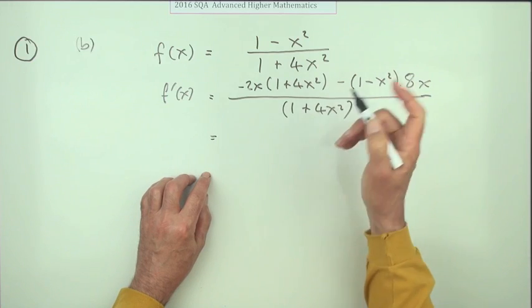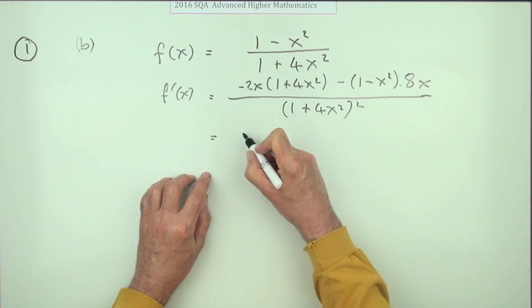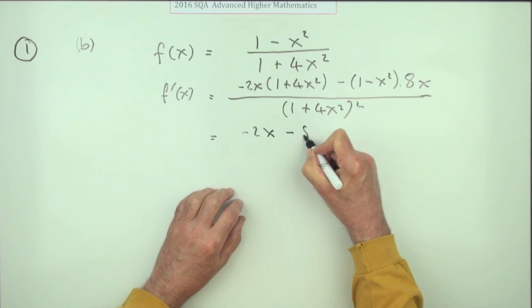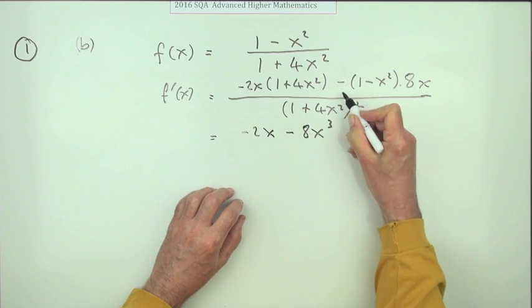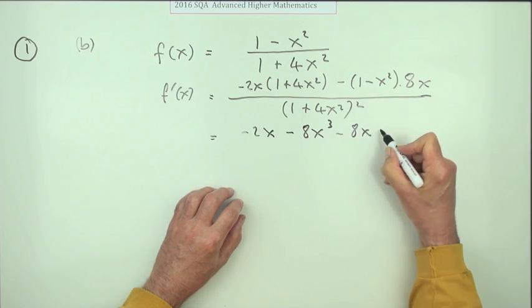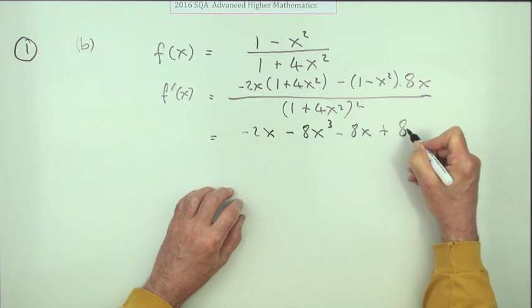Less sophisticated but it might be more effective in this case. Negative 2x minus 8x³ minus 8x and then plus 8x³, there you go.